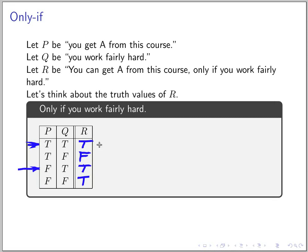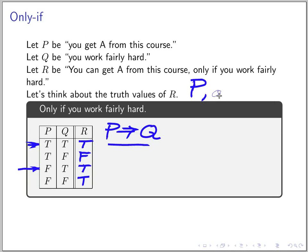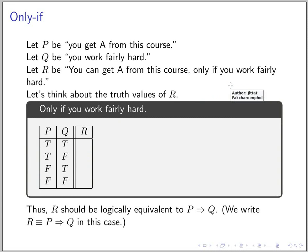If you look closely at the truth values of R, you can see it's the same as P implies Q. So this is what it means when you say 'P only if Q' — 'only if' is just an implication, and it's logically equivalent to P implies Q.